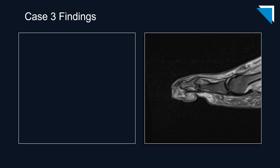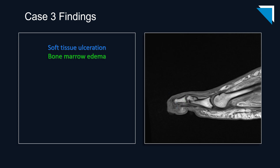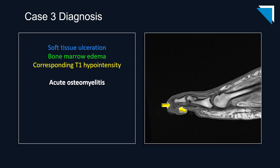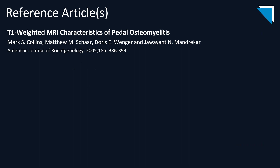There is a soft tissue ulceration abutting the distal phalangeal head with some subjacent phlegmonous change. There is increased T2 signal in the distal phalanx with the classic associated T1 hypointensity of osteomyelitis. So this is in fact a case of acute osteomyelitis with an incidental fracture of the metatarsal base. There's also chronic deformity of the proximal phalanx which should also be mentioned. An excellent reference article on osteomyelitis was used for this section.